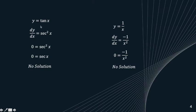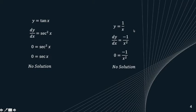We can confirm this analytically. The derivative of tan x is sec²x. Setting sec²x = 0 gives sec x = 0, i.e., 1/cos x = 0, which has no solution. For y = 1/x, the derivative is −1/x². Setting that equal to zero leads to 0 = −1, a false statement, so there is no stationary point.